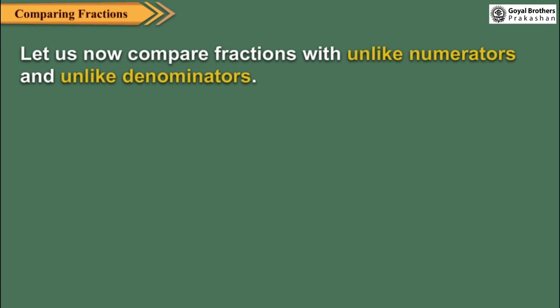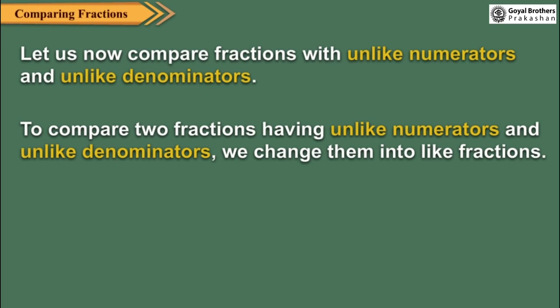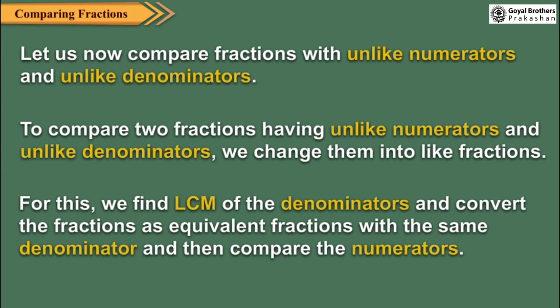Let us now compare fractions with unlike numerator and unlike denominators. To compare two fractions having unlike numerator and unlike denominators, we change them into like fractions. For this, we find the LCM of the denominators and convert the fractions as equivalent fractions with the same denominator and then compare the numerators.